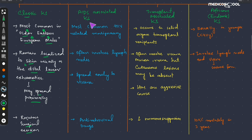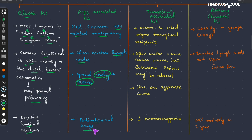The AIDS-associated Kaposi sarcoma is, as indicated by the name, the most common HIV-related malignancy. It mostly involves the lymph nodes and can spread early into the viscera, causing malignancy there. The drug of choice for AIDS-associated Kaposi sarcoma is antiretroviral drugs.